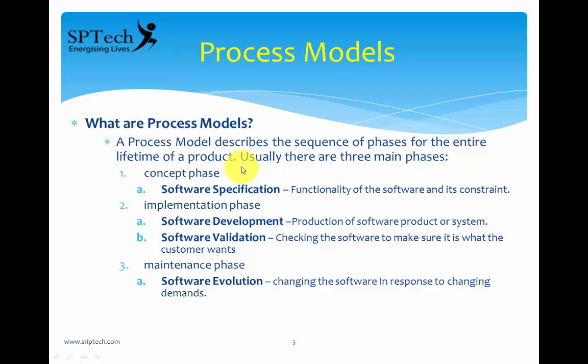Once software validation is complete, you deliver the software to the market or hand it over to the customer. Then the software enters the maintenance phase, also called software evolution — that is, changing the software in response to changing demands. For example, once you have developed and handed over an e-commerce portal, the customer will start evaluating it and keep giving changes — maybe once every two or three months, depending on the business need. You need to incorporate those changes and bring in new versions of the software. That is called software evolution.